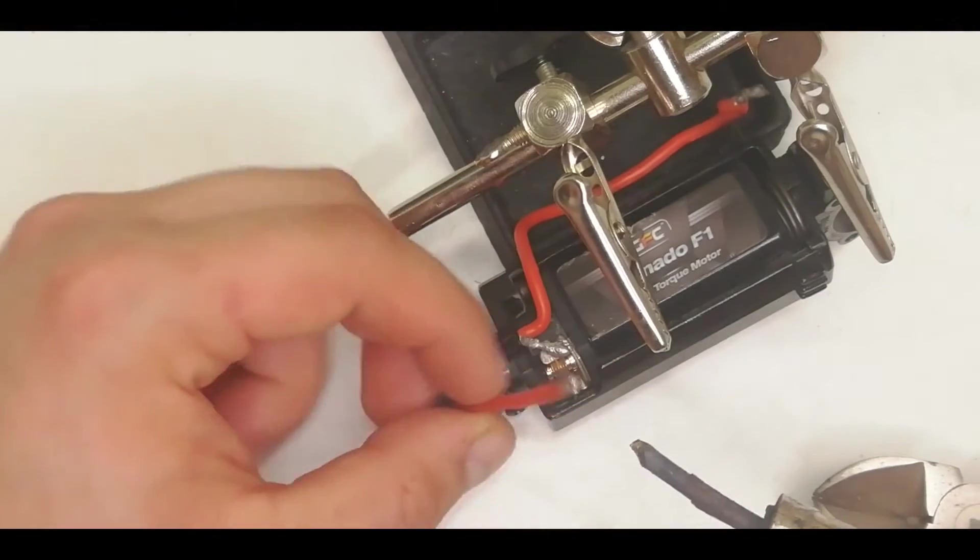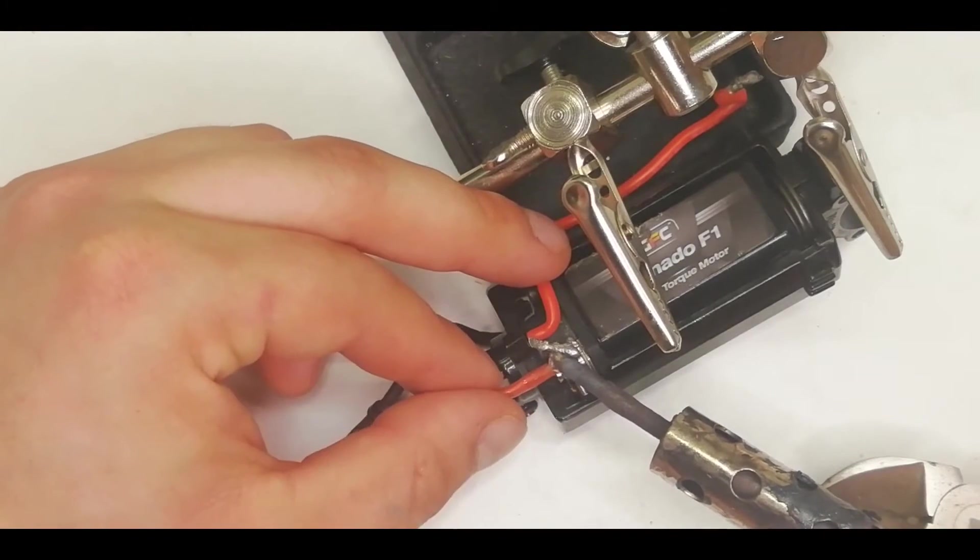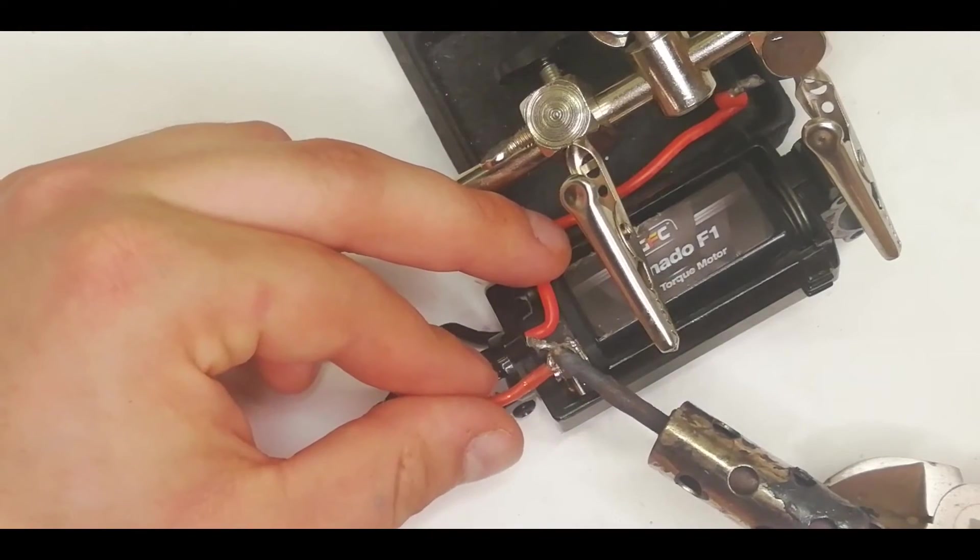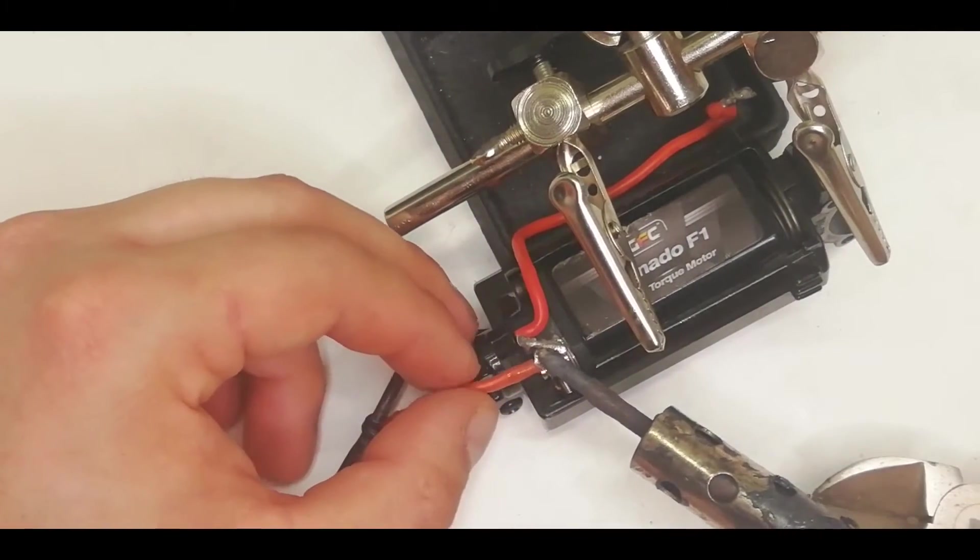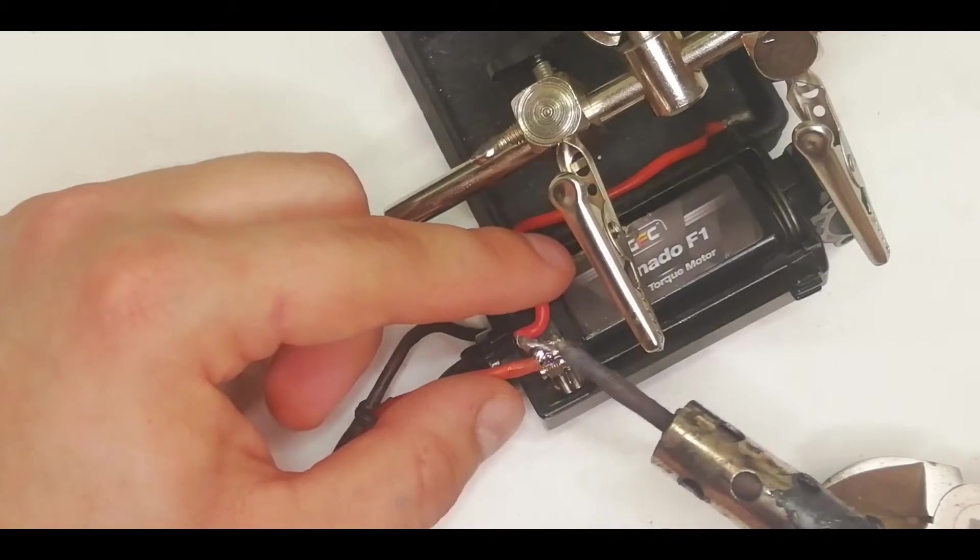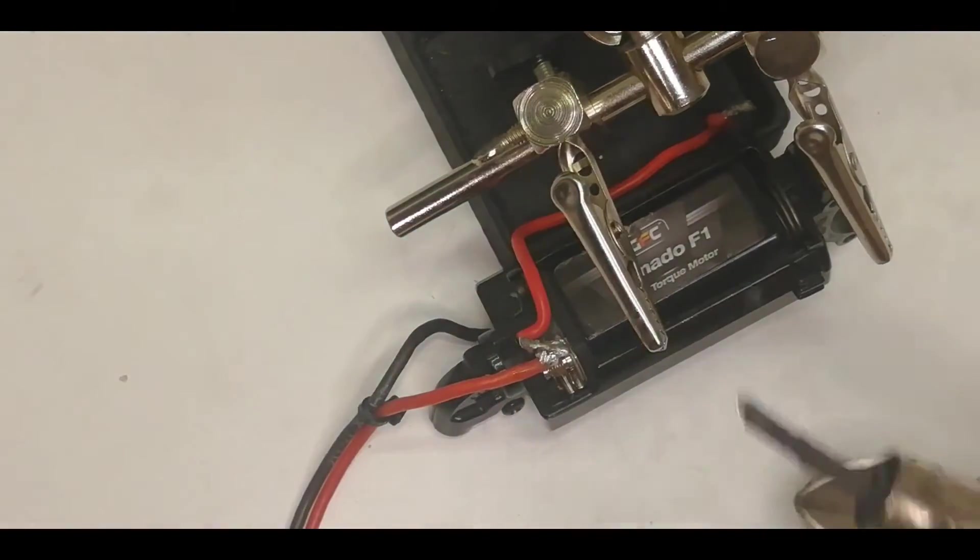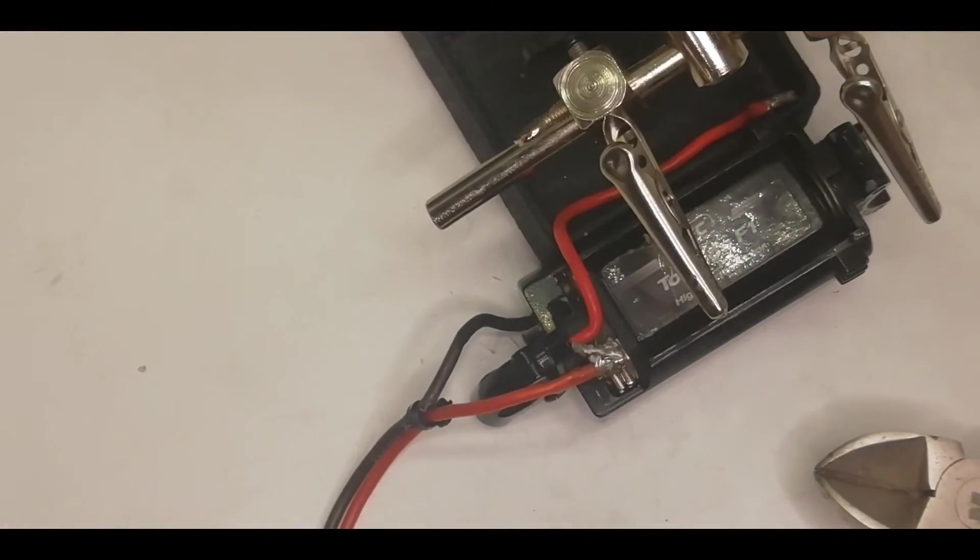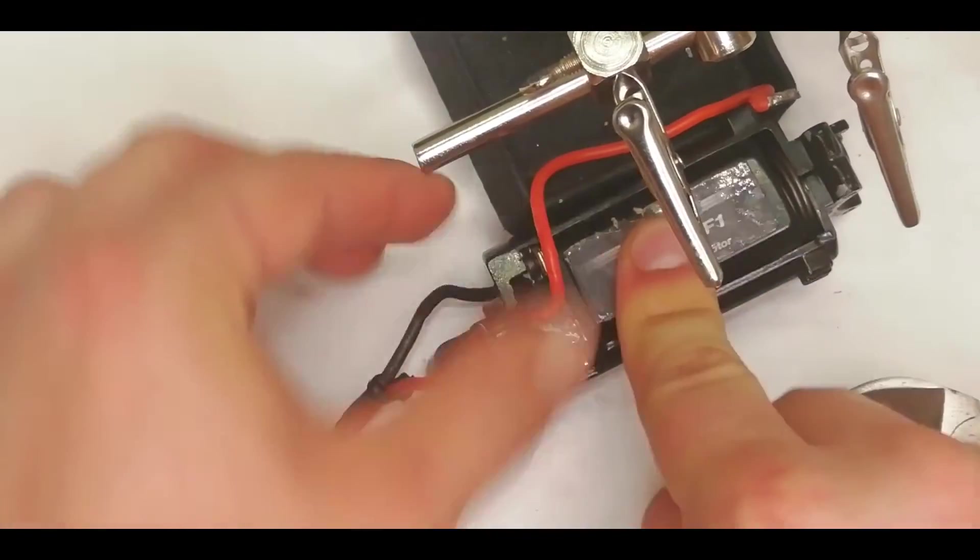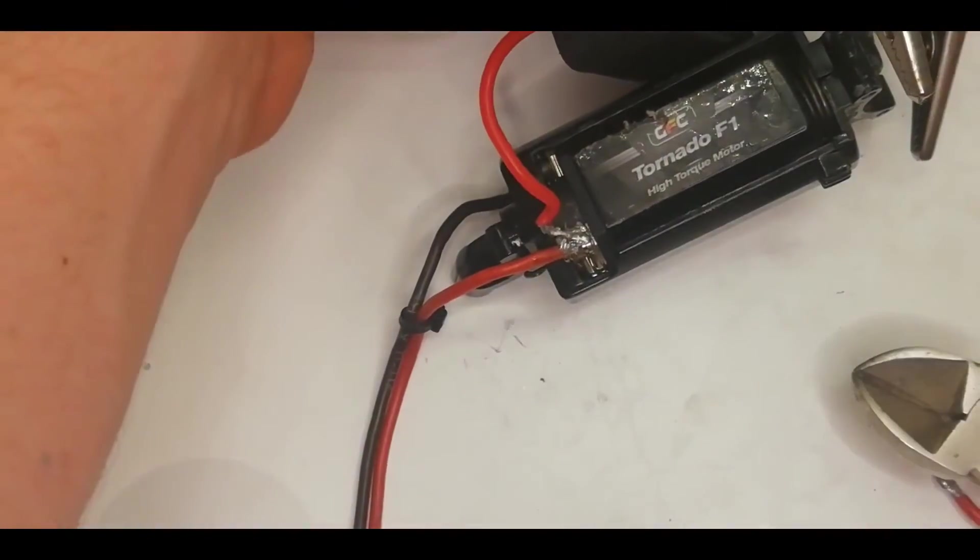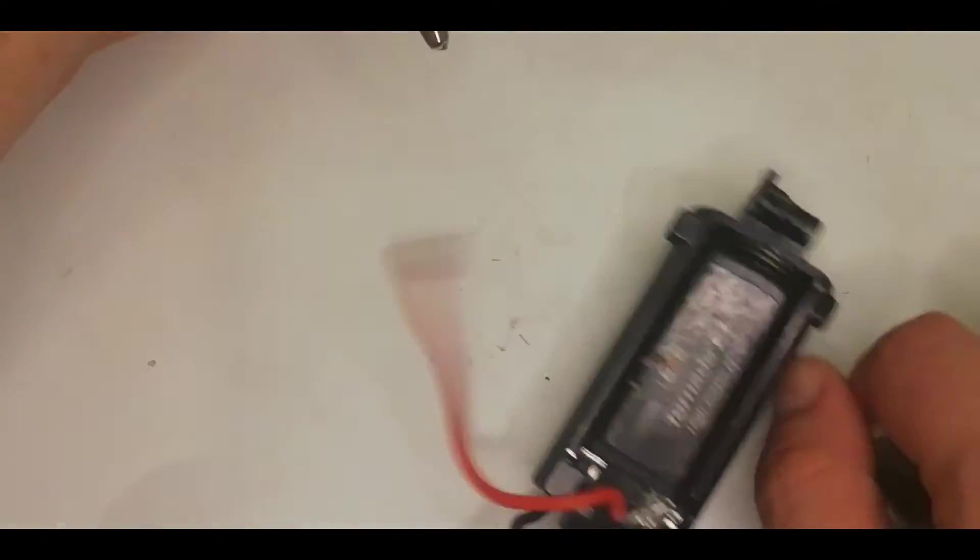Because the positive tab on the motor already has solder on it, we do not need to tin that. We want to keep this wire connected on for the contacts. So if we hold the wire to the connection and then heat it up, the solder should combine. That's now bonded on all right. That's a nice solid joint. Those wires aren't coming off any time soon, but the soldering iron is going to fall over. And I'm probably going to burn myself before the end of this video at this rate.